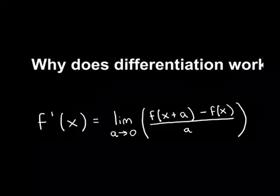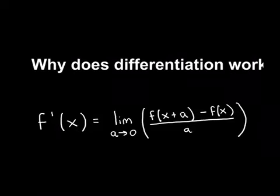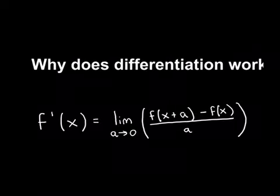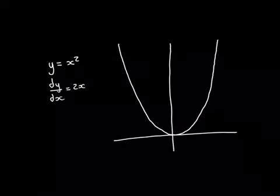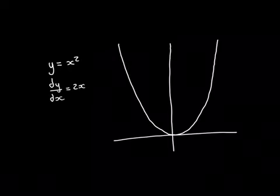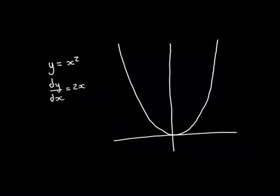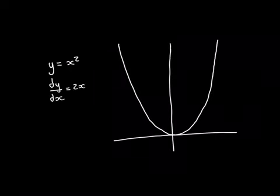We're going to discuss why differentiation works and what is the meaning of this formula. To do this we're going to use the example of y equals x squared and try to understand why the gradient of the tangent line to the curve at any point along this curve is given by 2x.